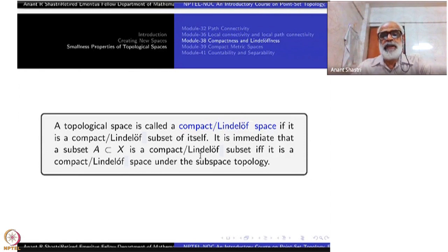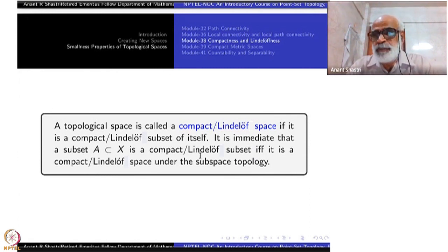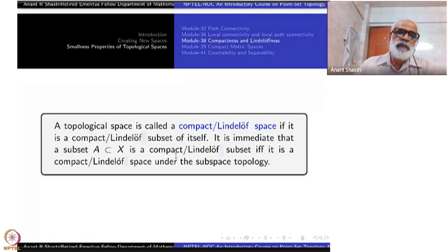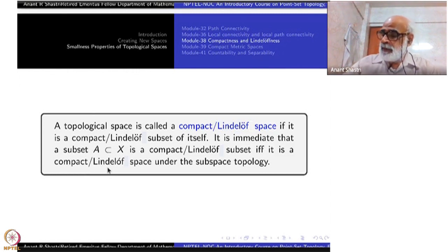It is immediate that a subset A of X is compact or Lindelof if and only if it is compact or Lindelof as a subspace. Take the subspace topology — then as a space it must be compact and Lindelof. These two are equivalent because an open cover using open subsets from the larger space intersected with the given set will cover it, and those are the open subsets in the subspace. So these two notions are the same; there is no difference between them. In particular, once a space is compact, it does not matter where it is contained as a subspace.